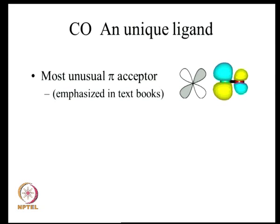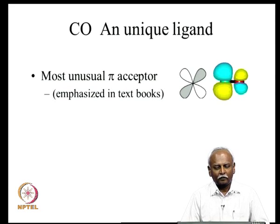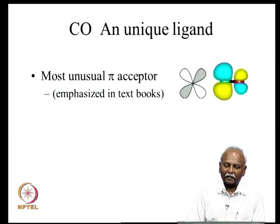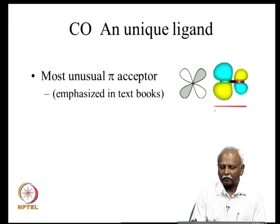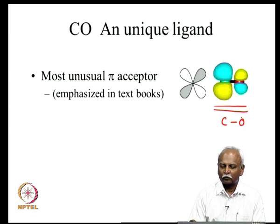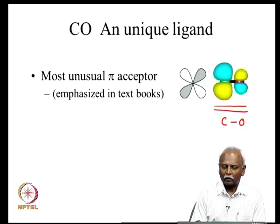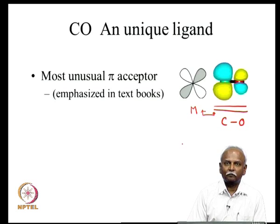The aspect most often emphasized in organometallic chemistry is that carbon monoxide is a pi acceptor ligand. It has a pi acceptor orbital with a very large lobe on the carbon side and a smaller lobe on the oxygen side. This pi acceptor orbital can overlap very effectively with the filled orbital of the metal, making the interaction very effective and giving carbon monoxide its unique place.